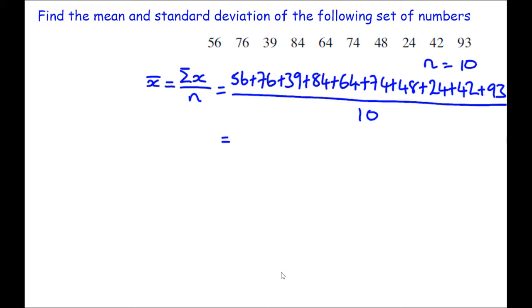We'll go away and type this into the calculator, and we should get 600 over 10, which gives us back an answer of 60.